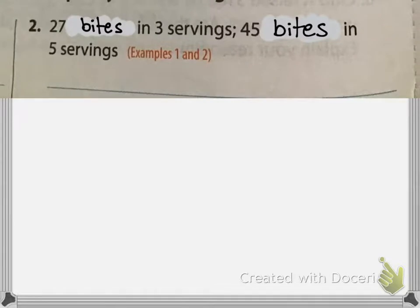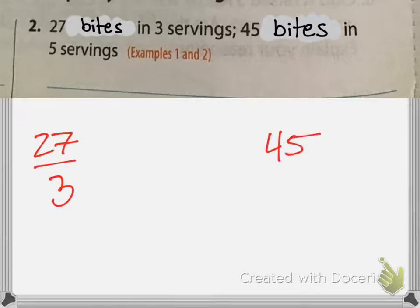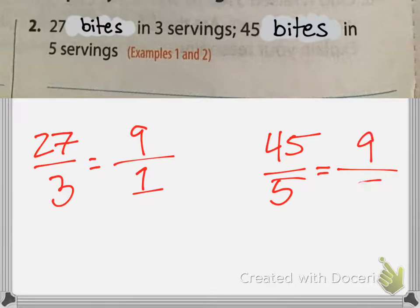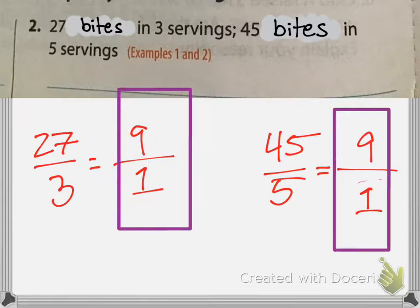There are 27 bites in 3 servings and 45 bites in 5 servings. I set up my ratios: 27 over 3 and 45 over 5. The greatest common factor between 27 and 3 is 3 — 27 divided by 3 is 9. The greatest common factor between 45 and 5 is 5 — 45 divided by 5 is 9. So these are equivalent ratios.